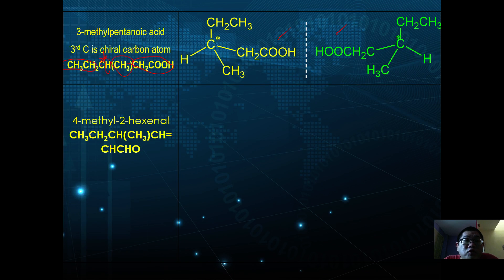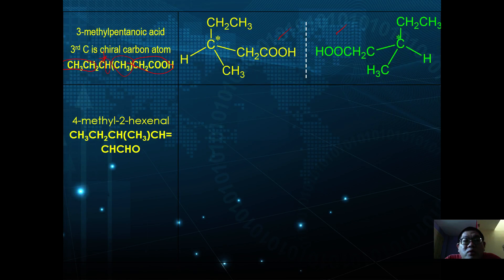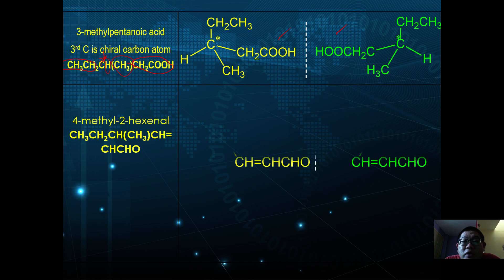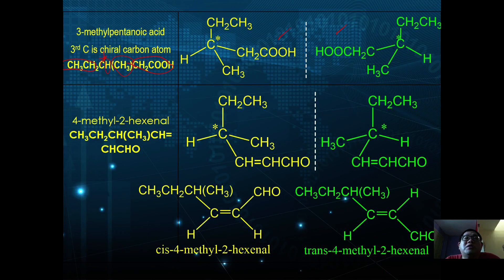Another example is 4-methyl-2-hexenal, which exhibits not only optical isomerism but also geometrical isomerism — both types of isomerism exist in this molecule. The geometrical isomerism manifests as cis and trans forms. Some molecules, if drawn carefully, can exhibit both geometrical and optical isomerism.